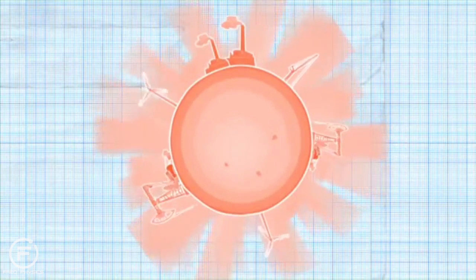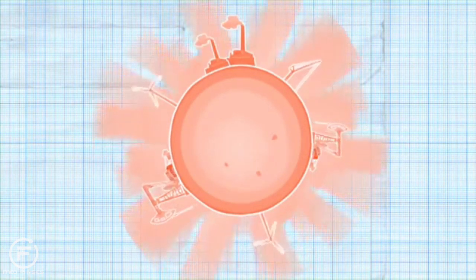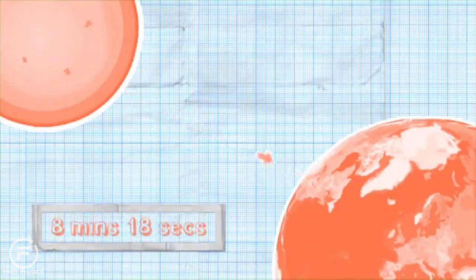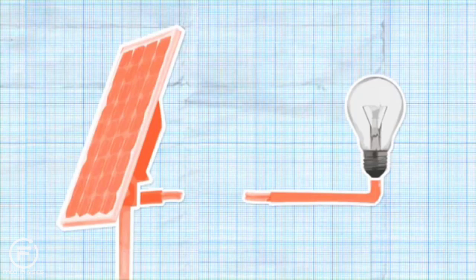A gigantic, renewable power station in the sky, the sun. 8 minutes and 18 seconds after leaving the sun, sunlight arrives on Earth, and we can use it for generating electricity.